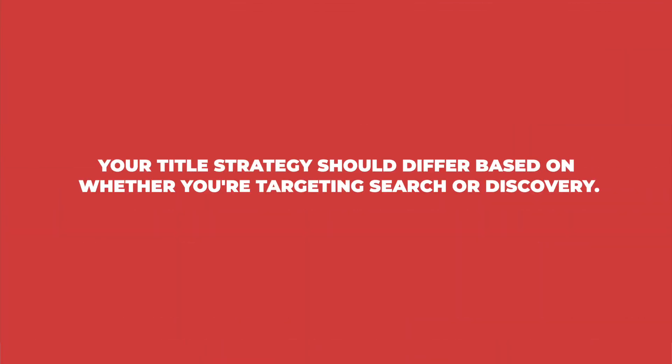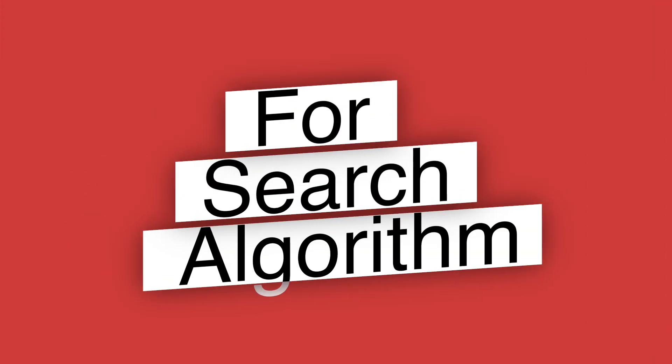Here's something crucial most creators miss: your title strategy should differ based on whether you're targeting search or discovery. For the search algorithm, use direct, keyword-focused titles that match exactly what people are searching for. For example, if people are searching for 'how to edit videos in Premiere Pro,' make that your exact title.